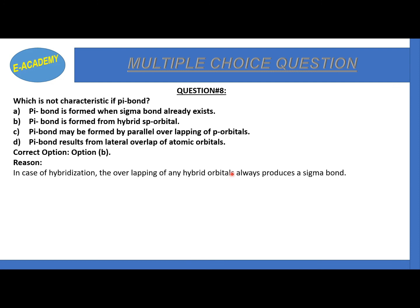Pi bond is formed from hybridized p orbital. This statement is not characteristic of pi bond. The reason: in case of hybridization, the overlapping of any hybrid orbital always produces a sigma bond.